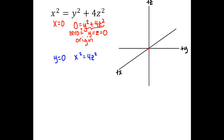There are actually infinitely many values of x and z that make this equation true. For example, x = ±2 and z = ±1 work, as do x = ±4 and z = ±2. To find all the solutions, we take the square root of both sides — remembering the ± — and we get x = ±2z.